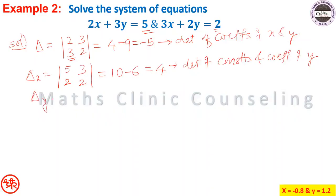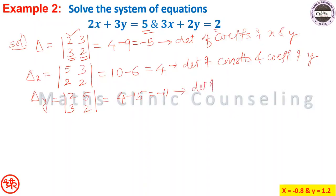Similarly, delta_y: replace coefficients of y by constants, keeping x-coefficients 2 and 3. So delta_y equals the determinant [2, 5; 3, 2], which is 2·2 minus 5·3, equal to 4 minus 15, equal to minus 11. This is the determinant of coefficients of x and constants.